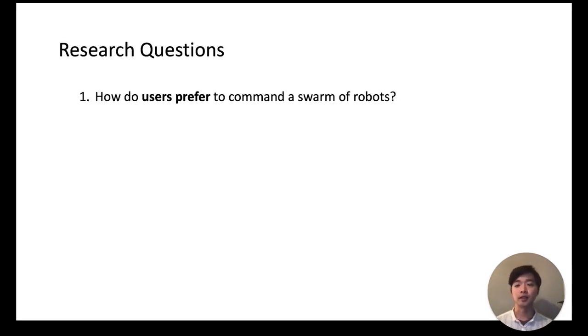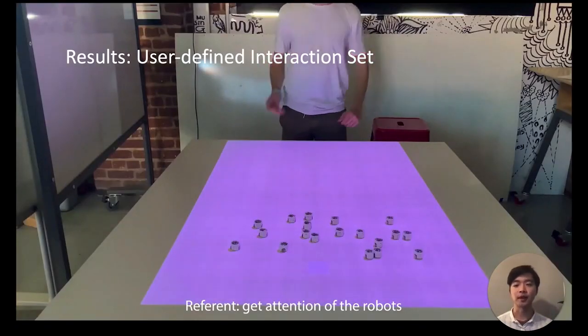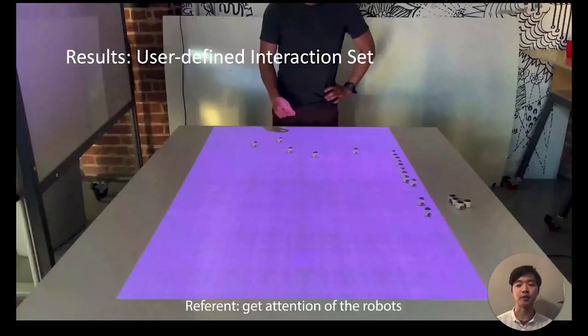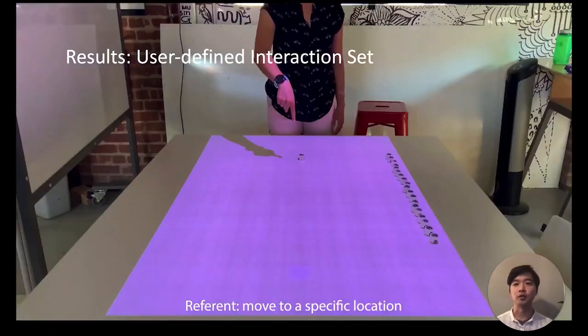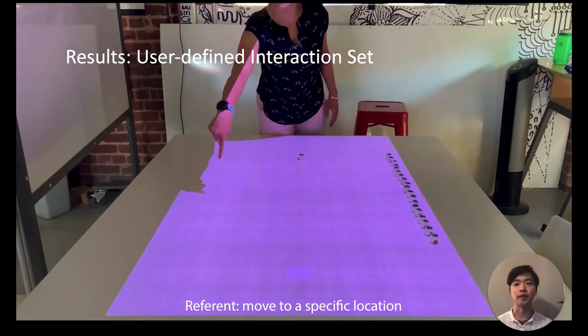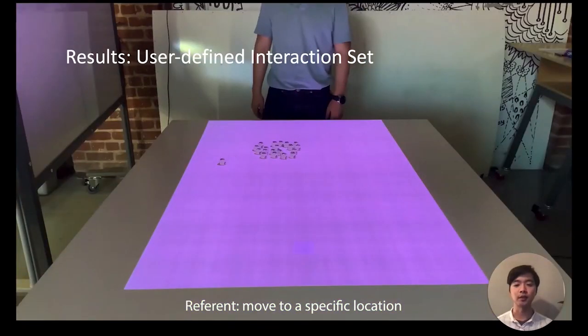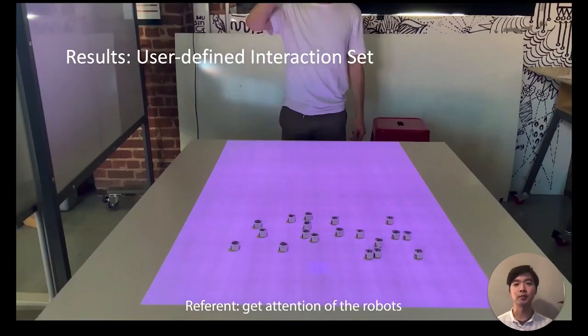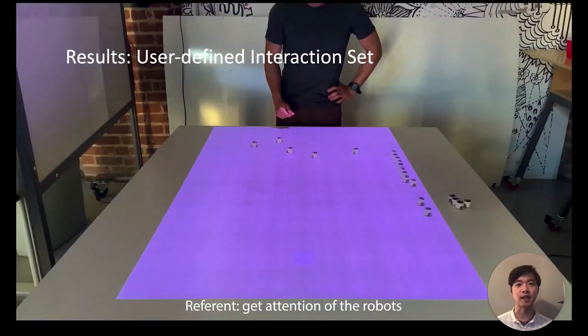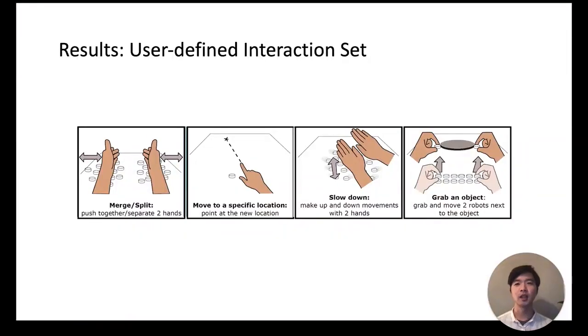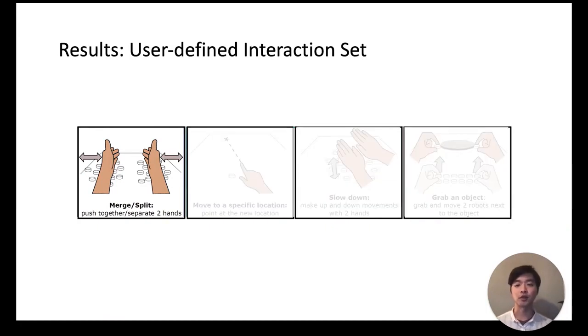Looking at the results for the first question, we compiled a user-defined interaction set by combining responses from the users. Some of them are shown here. To command a robot to move to a specific point, participants pointed at the desirable location. When there are many robots, participants physically moved one of them towards the target goal. To get attention of the robots, participants either waved at them or snapped their fingers. Combining all of these we generated a comprehensive set and the interactions with the highest agreements are shown here. For instance, to merge or split a group of robots, participants used their two hands to either virtually push together the robots or separate the robots.